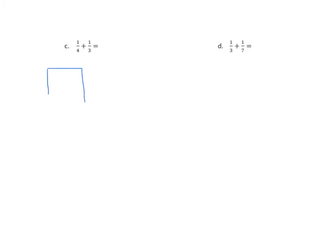We're going to start these problems by making some rectangular representations similar to those that we saw in Lesson 1. We're going to make two rectangles, and each one of these rectangles is one whole, so we can bracket the top and put one whole.